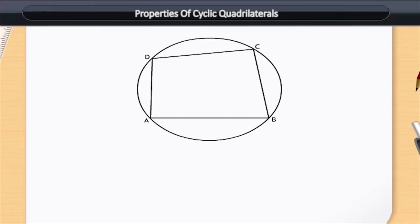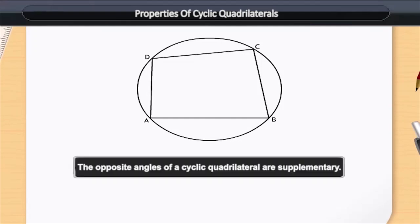The first property tells us that the opposite angles of a cyclic quadrilateral are supplementary. This means that the sum of any pair of opposite angles of a quadrilateral is 180 degrees. Now, let us watch this image to understand this property.